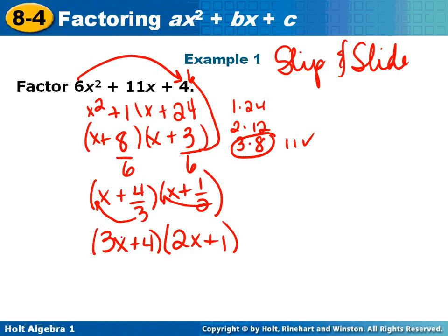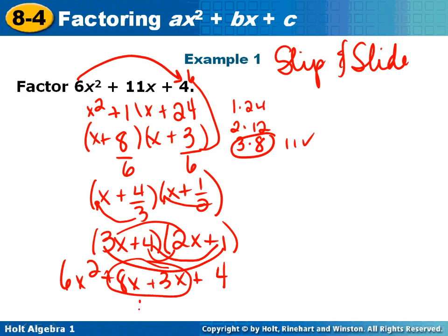Now, if you notice, this would give me 6x squared. The inside is 8x. The outside is 3x. And the last is 4. 8x and 3x add together to give me 11x. And if you see here, we have the same problem as we began with. So here is your solution right there.